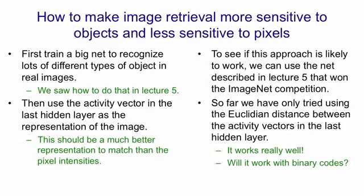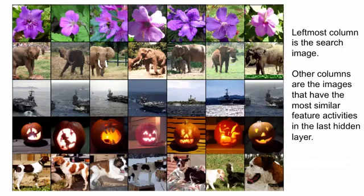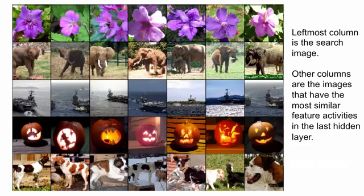It turns out it works really well — we don't know yet whether it will work with binary codes. In the column on the left you see the query images, and to the right you see all the things that were retrieved. If you look at the elephant query image, you'll see that what gets retrieved is other elephants, but with very different poses — those images wouldn't have very good overlap in pixel space. If you look at the Halloween pumpkins, all the retrieved things are other Halloween pumpkins. Similarly with the aircraft carrier, we retrieve other images of aircraft carriers that are very different. So we anticipate that if we could reduce these activity vectors to short binary codes, we would have a fast and effective way of retrieving similar images just by the content of the image.